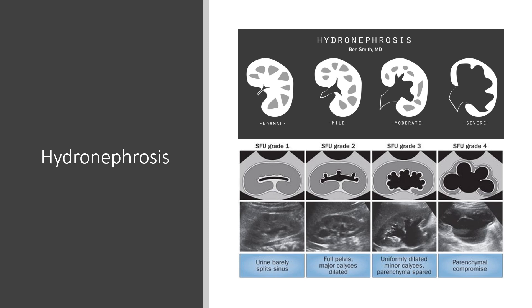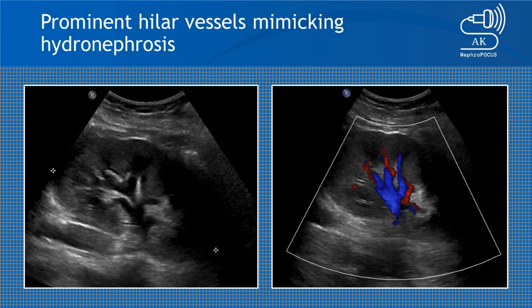Some other subjective measures are used, one of them being from the Society of Fetal Urology called the SFU system, which is commonly used by radiologists. One possible mimic of hydronephrosis on ultrasound is a patient who has prominent hilar vessels. The best way to distinguish between these is by using color Doppler, where you'll see activity in a patient with prominent hilar vessels, whereas in hydronephrosis you'll see absence of that activity.